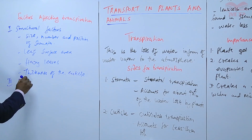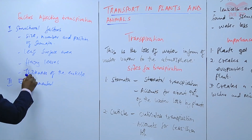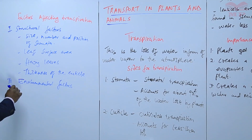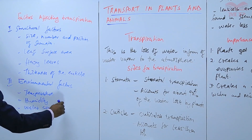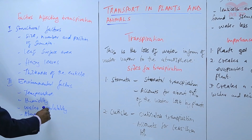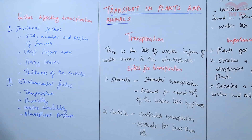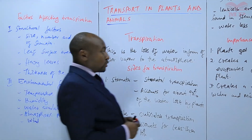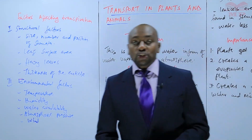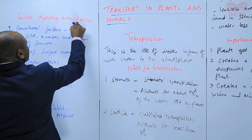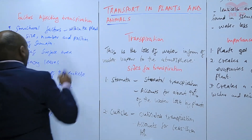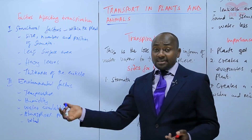Then we have what we call the environmental factors that affect transpiration, such as temperature, humidity, water availability, atmospheric pressure, and wind. In summary, structural factors are factors within the plant, while environmental factors are outside the plant — they are in the environment, as the term suggests.